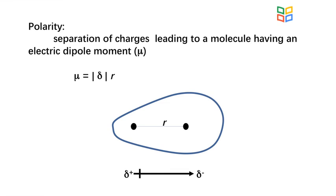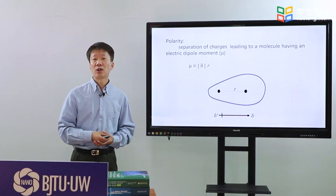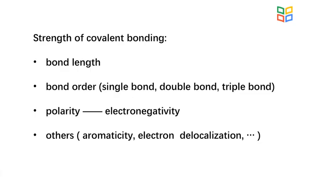Polar covalent bonds have both covalent character and some ionic character. So polar covalent bonds are stronger than non-polar covalent bonds.